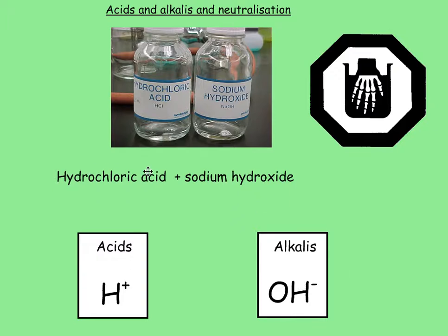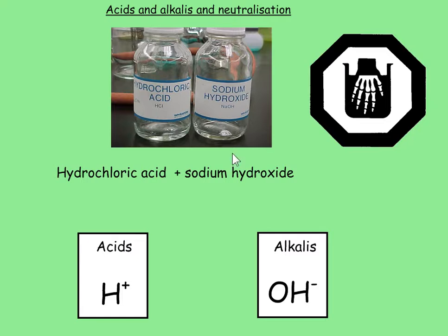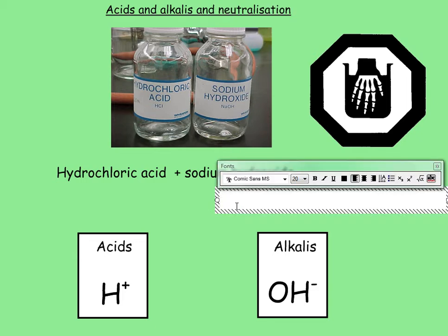Now, when you add hydrochloric acid and sodium hydroxide together, we make one of those lovely salts — it's called a neutral salt. So in this case you would make the neutral salt sodium chloride. Had it been sulfuric acid, it would have been sodium sulfate. And had it been nitric acid, it would have been sodium nitrate. Do remember that. And you also make some water.